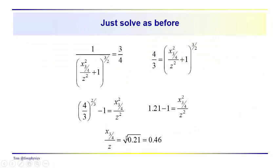If we go through the calculations, again, we're just setting this equal to three quarters and solving for x three quarters over z.